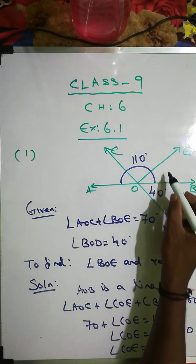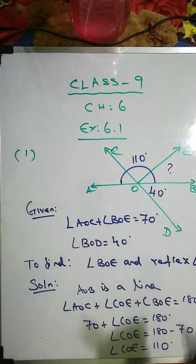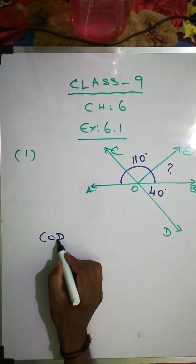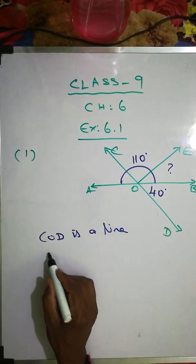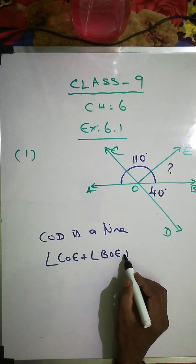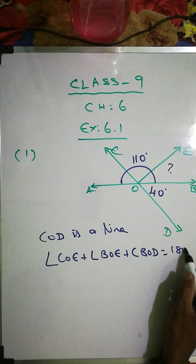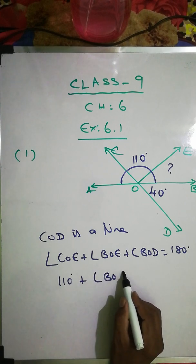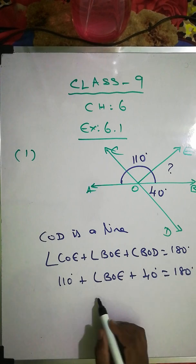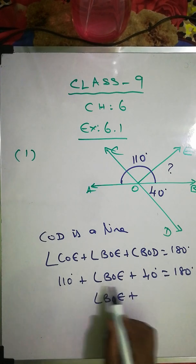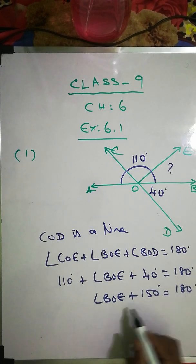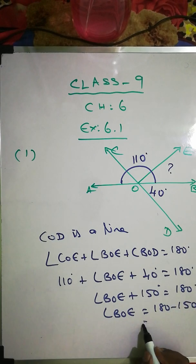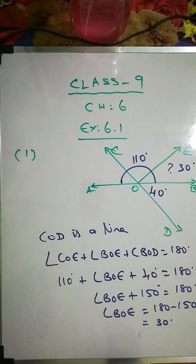Now we have COE as 110 degrees and BOD is given as 40 degrees. To find angle BOE, we use COD is a line, so angle COE plus angle BOE plus angle BOD equals 180 degrees. Substituting: 110 plus angle BOE plus 40 equals 180. Therefore angle BOE equals 180 minus 150, so angle BOE is 30 degrees.